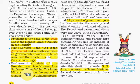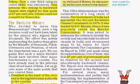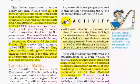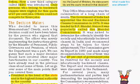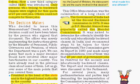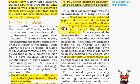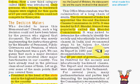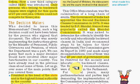The prime minister must have the support of the majority of Lok Sabha members to head the government. This office memorandum was the culmination of a long chain of events. For example, the Government of India had appointed the Second Backward Class Commission in 1979, headed by B.P. Mandal — hence called the Mandal Commission — which recommended that 27% of government jobs be reserved for socially and educationally backward classes.